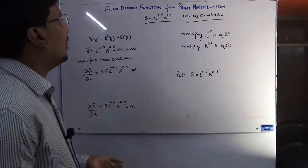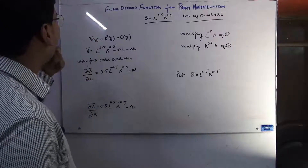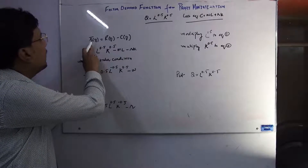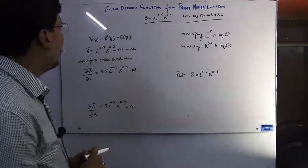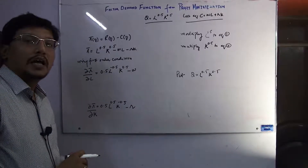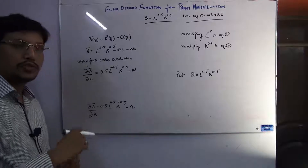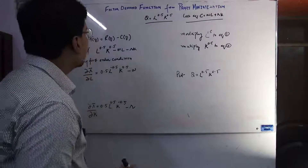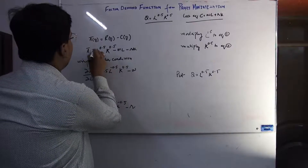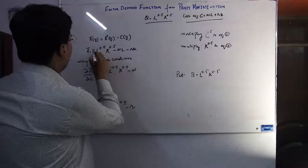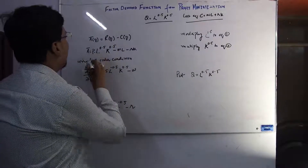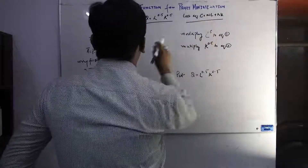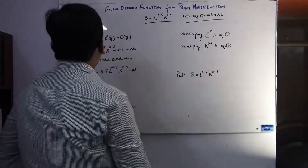First, we set up the profit equation. Profit, represented by π, is a function of output. Revenue equals price P times quantity Q, where Q is the production function. Multiplying by the output price gives total revenue. The cost function is then subtracted: minus wL minus rK. So the profit equation is π = PQ − wL − rK.